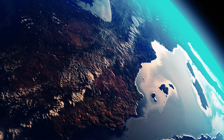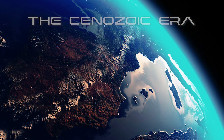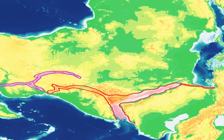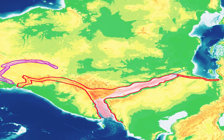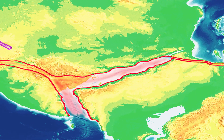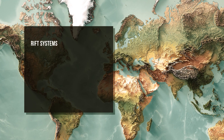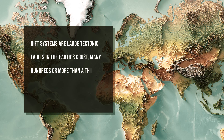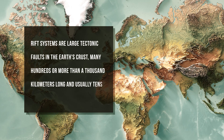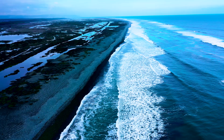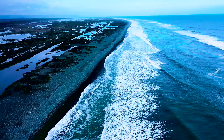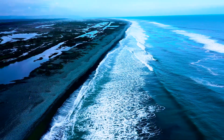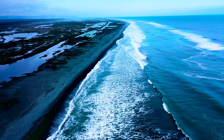After the extinction of the dinosaurs, the Cenozoic Era begins and continues to the present day. Intracontinental rift systems were formed in the late Permian and Triassic. Rift systems are large tectonic faults in the Earth's crust, many hundreds or more than a thousand kilometres long and usually tens of kilometres wide. Rift systems developed into the Atlantic and Indian Oceans, contributing to the partitioning of Laurasia and Gondwana into separate territories.